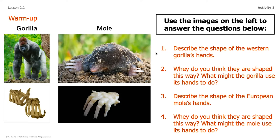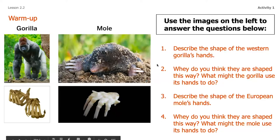Here are the questions you're going to want to jot down on your piece of paper. I really want to push you to use strong observations when describing the shapes of their hands — you can use the image or the image of the skeletal structure. Focus on creating detailed descriptions. Questions two and four are going to ask you to think about why those structures are shaped the way they are. Go ahead and pause the video now, grab paper and pencil, and take a few minutes to answer questions one through four.